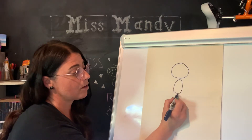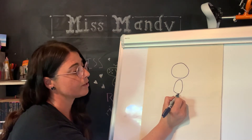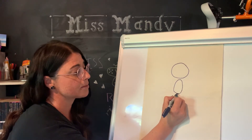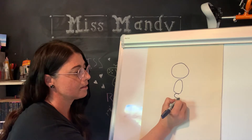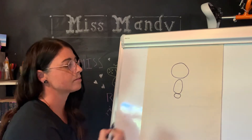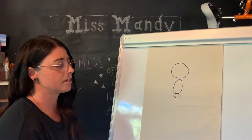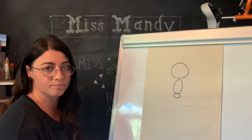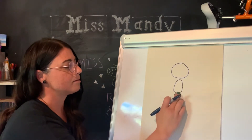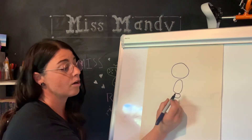Next we're going to go right under that oval and do another circle. This one's going to be smaller than the head. A circle right under that oval, and once you're done with that we're going to do another oval right underneath the circle — a long stretched out oval. And this is your butterfly's body.